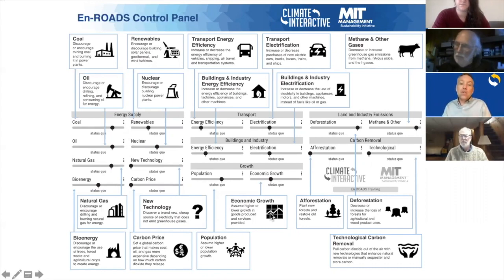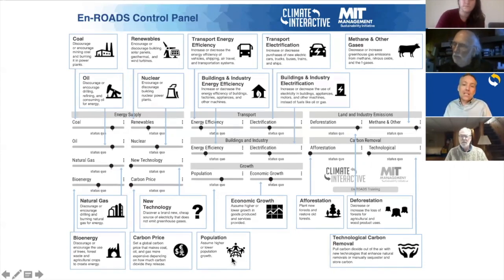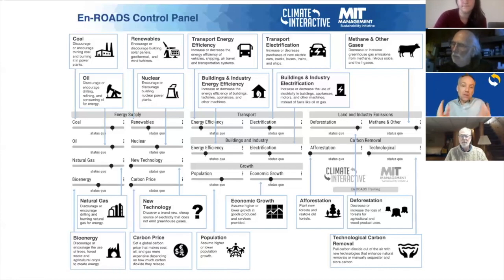Technological carbon removal involves five different methods of pulling carbon out of the atmosphere — technologies that don't exist at a large scale, but maybe they could help someday. You could also imagine a world with slower economic growth. Population could also grow more slowly or more quickly. So those are all the things that will be important for you to understand that you can change when you actually play the game.